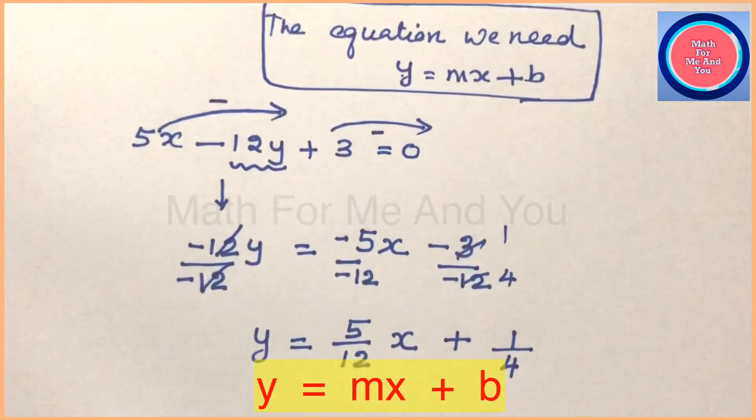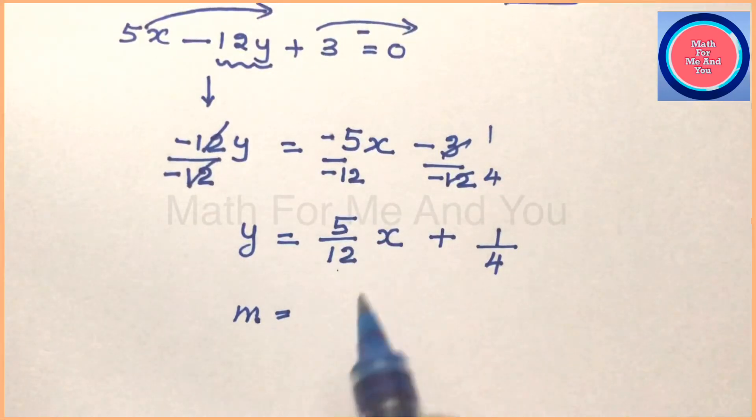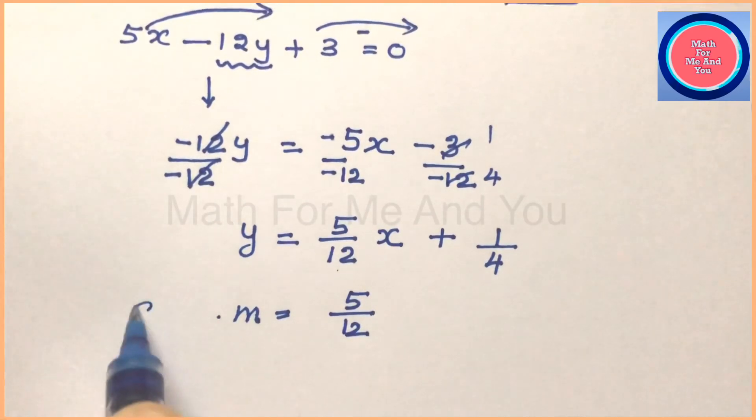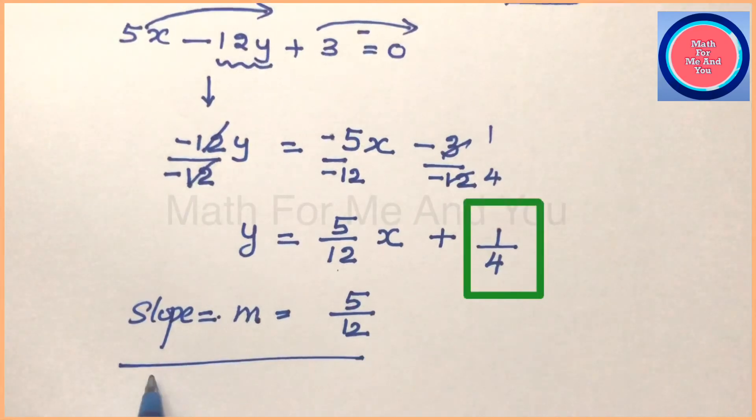Now this equation is of the form y equals mx plus b. When you compare, in place of m we can see the number 5 over 12, and in place of b we can see the number 1 over 4. So what is m or slope? It is 5 over 12. So we get slope, m equals 5 over 12. And what about 1 over 4? This is the y-intercept.